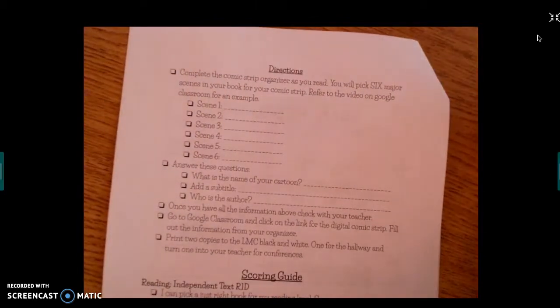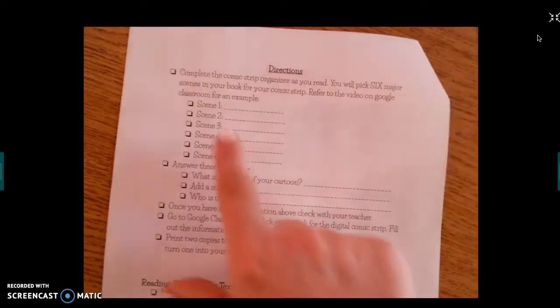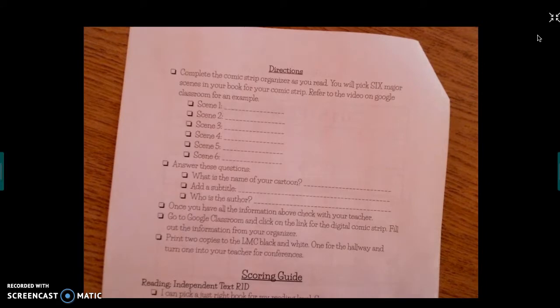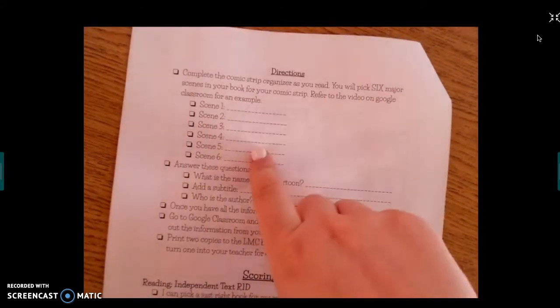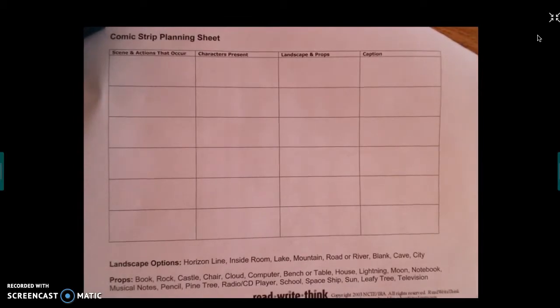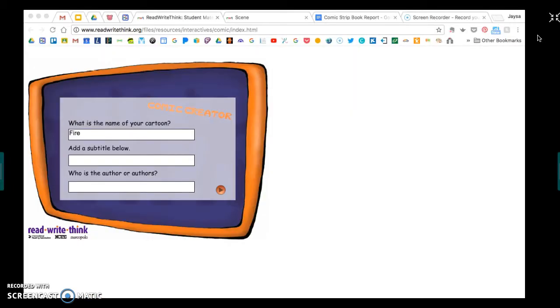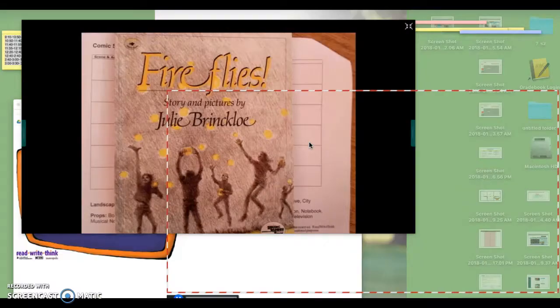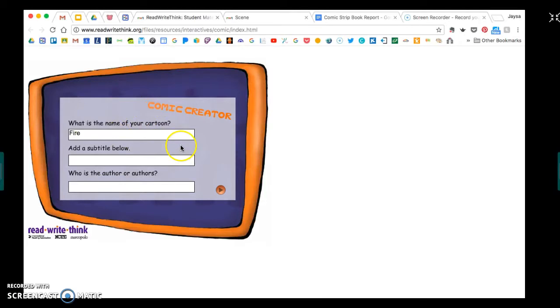For this book report you will be choosing six major scenes in your book for your comic strip. So you are going to actually as you come up with a scene that you think is important, think of our sequencing events. First this happened, then this happened, and you'll need six scenes. So you're going to fill out these scenes here. This is your comic strip planning sheet. So I am using the book Fireflies as an example, and you will click in Google Classroom and it will take you to this comic creator.